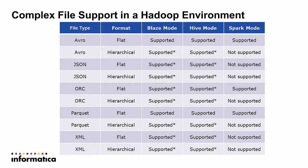The complex file support grid shows the different Hadoop file formats that Informatica Big Data Management supports: Avro, JSON, ORC, Parquet, and XML. It breaks down what is supported in each distributed framework. In Blaze and Hive mode, all these formats are supported, with asterisks noting specific limitations documented in the help guide. In Spark, quite a few formats are not yet supported — either because Spark doesn't support them or Informatica will add support in a future release.